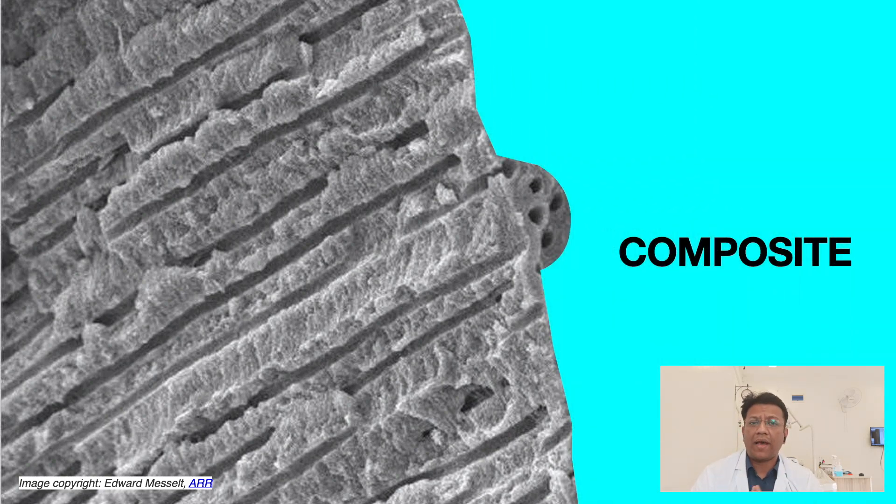Let's imagine that I do a composite restoration but accidentally leave an air void behind. The patient goes back and starts eating hot, cold, or sweet foods. That tiny void is essentially a vacuum chamber, and there will be pressure changes within it. Due to these pressure changes, dentinal fluid moves inside the dentinal tubules, and therefore the patient perceives post-operative pain.